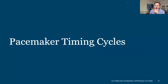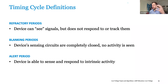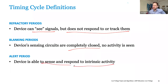Moving along to pacemaker timing cycles. If you don't deal with pacemakers, it's a difficult concept, but it's easiest to remember that pacemakers are just a bunch of little clocks running at once. When an event occurs, it starts or stops a clock, and that essentially dictates the behavior of the device. Refractory periods are when the device can observe a signal but doesn't respond to it. Blanking periods are when the device is completely blind to any signal. Alert periods are when the device is able to sense intrinsic activity and respond to it appropriately.